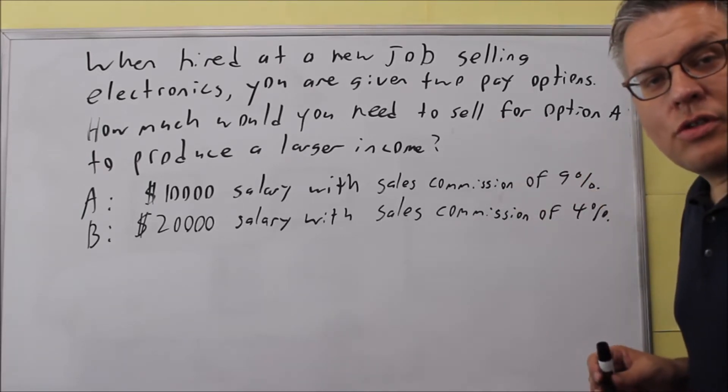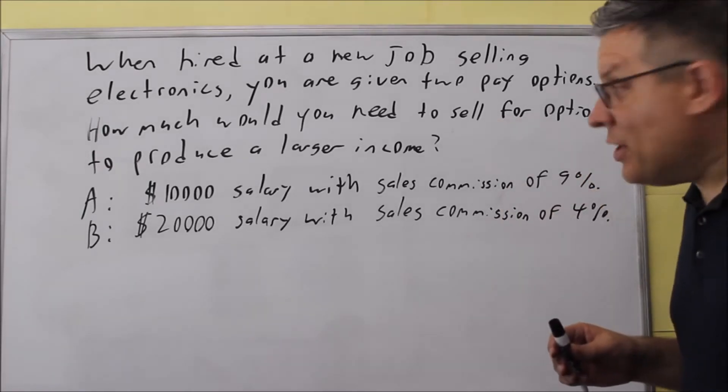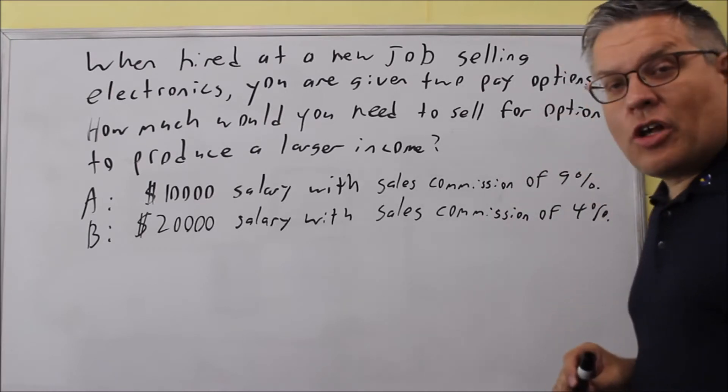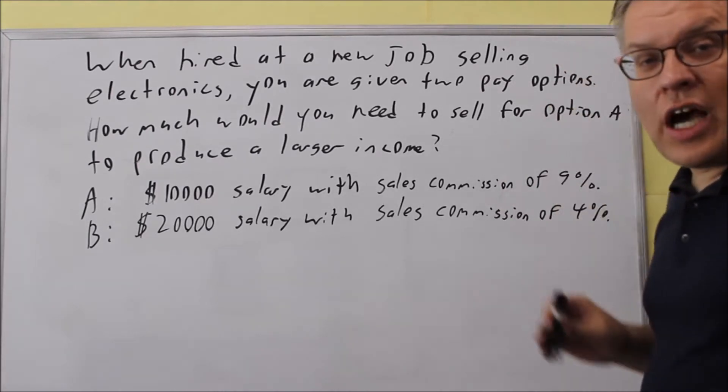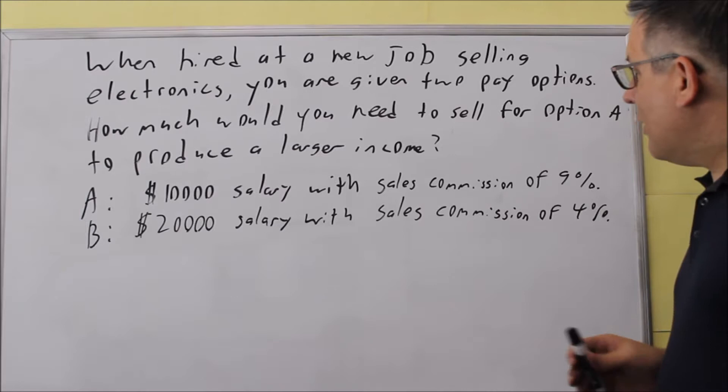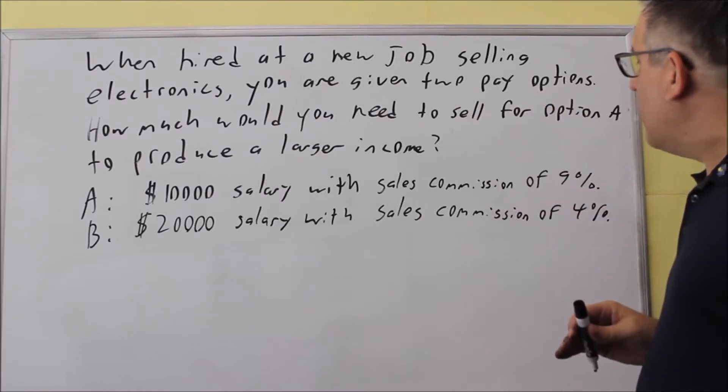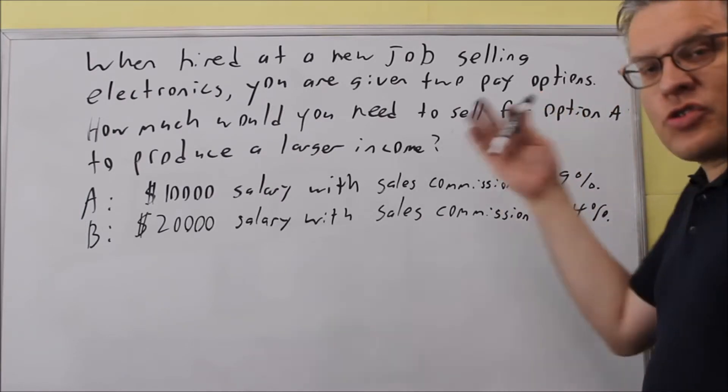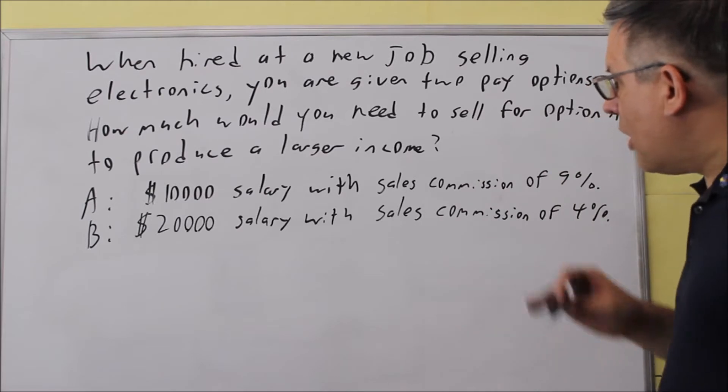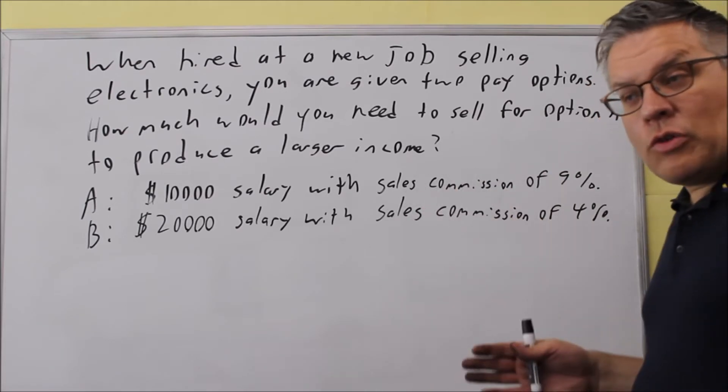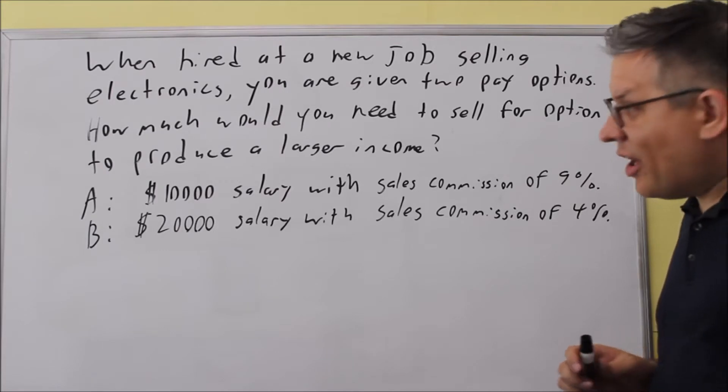For this problem you're given two options, option A and option B. You're hired at a job selling electronics and you want to see which of these options is going to be better for you. It says what would you need for option A to produce the larger income. You want to think about what would be better in the long run. It depends on how much commission that you sell.